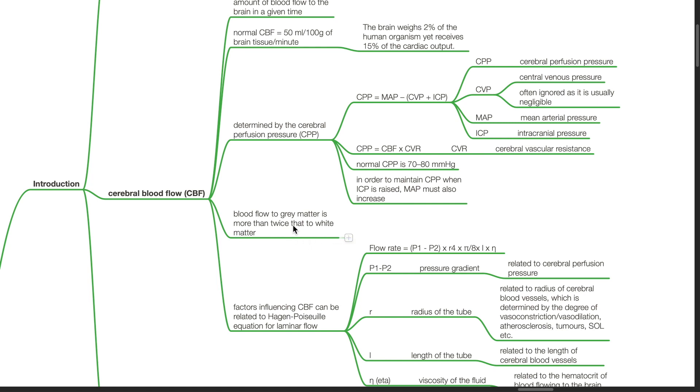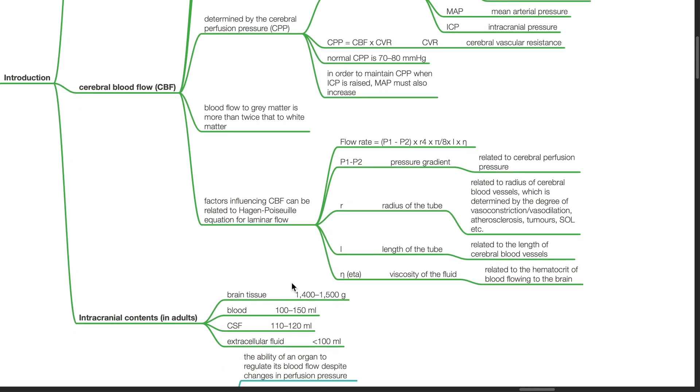Blood flow to the grey matter is more than twice that to the white matter. Factors influencing CBF can be related to the Hagen-Poiseuille equation for laminar flow, where flow rate equals P1 minus P2 times R to the power of 4 times pi divided by 8 times L times eta, where P1 minus P2 is pressure gradient.